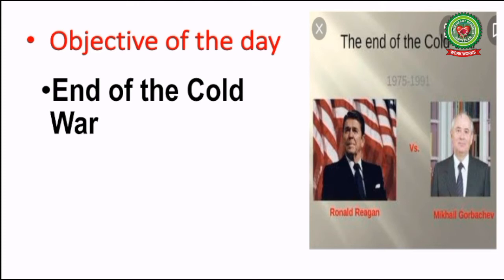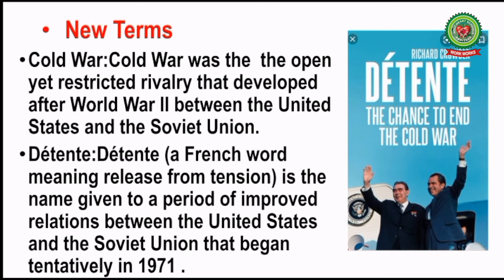Let's first discuss the new terms of this topic. The first term is 'Cold War.' Cold War was the open yet restricted rivalry that developed after World War II between the United States and the Soviet Union. In short, Cold War can be described as a period of intense tension between the USA and USSR that started after the Second World War in 1945 and lasted till the disintegration of USSR in 1991.